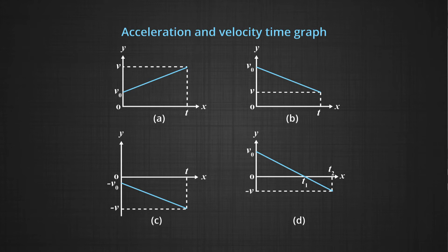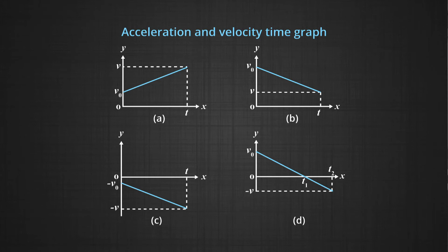In graph D, V0 is positive while the final velocity is minus V. At time T1 the velocity has become 0, and as it proceeds to time T2, the value becomes minus V in the opposite direction. The object's velocity first became lesser and reached 0 — a case of negative acceleration — then became even more negative, which is a case of acceleration. It is important to study the graph carefully before predicting anything from it.